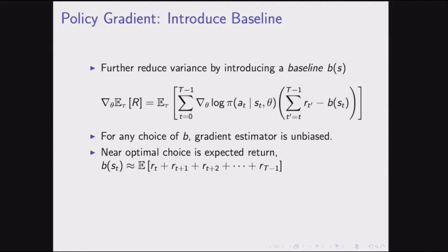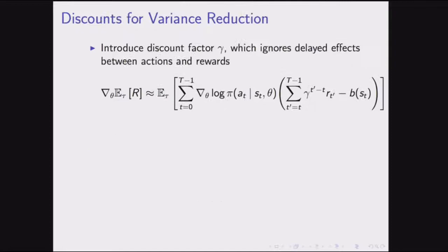The interpretation: we only want to increase the probability of an action if it was a good one. How do we tell? The sum of rewards after that action should have been better than expected. B(s) is the expected sum of rewards and we take the difference. This was a key variance reduction technique; all three variance reduction techniques are really important — nothing's going to work on any but small-scale problems unless you do these things.